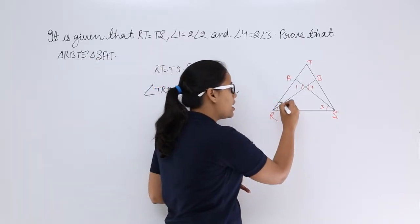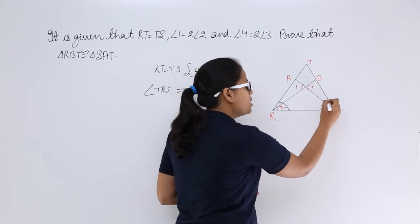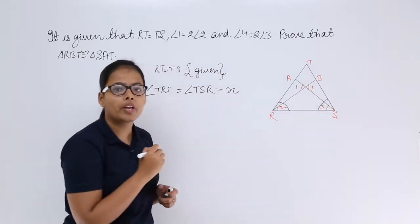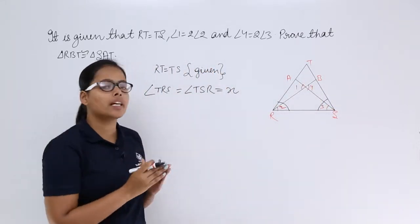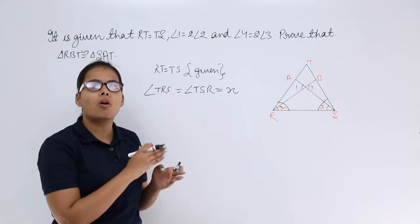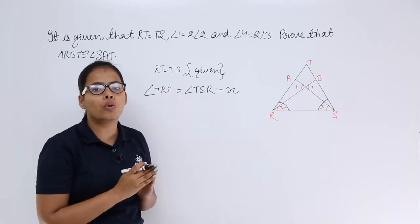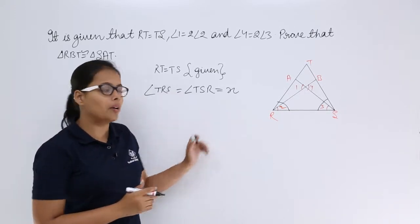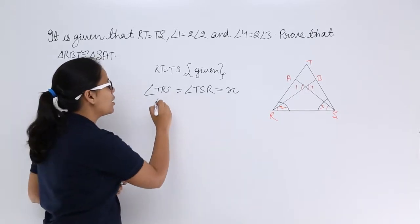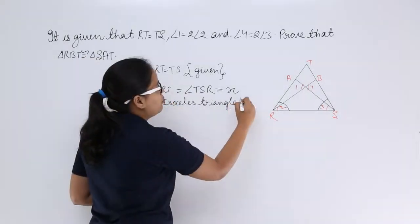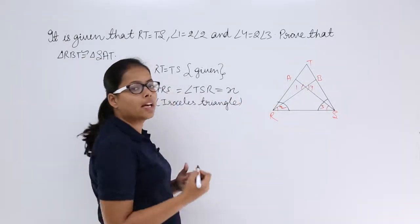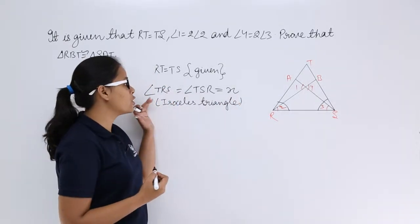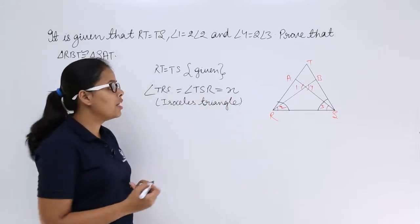I am saying that this angle is equal to this angle because these two sides are equal. If two sides are equal then their opposite angles are going to be equal. That's why both of these angles are equal to X.